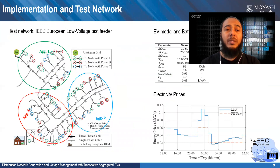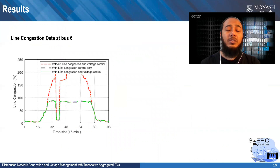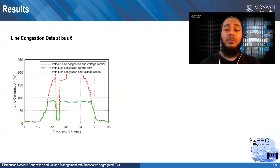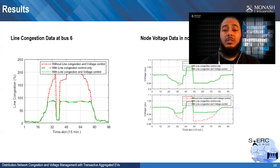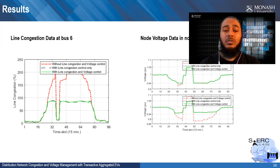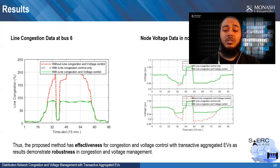Our proposed method is implemented in the European low voltage distribution feeder with the values presented here. For the result of line condition, the system operates with a huge line condition violation without the control. After the control algorithm is implemented, the system operates within the line condition, which is 100%. Results for the voltage at a typical node show that the network is operating beyond the voltage constraint without the control. After implementing our proposed voltage control, the system operates within the voltage constraint. Therefore, we can say that the proposed method has effectiveness for condition and voltage control with the transactive aggregated electric vehicles.